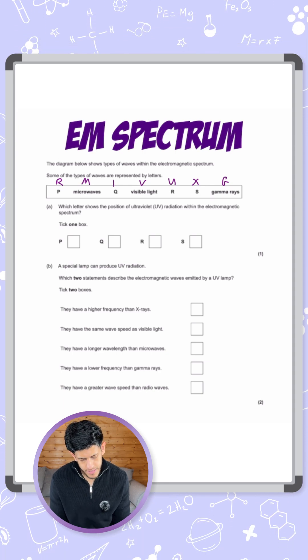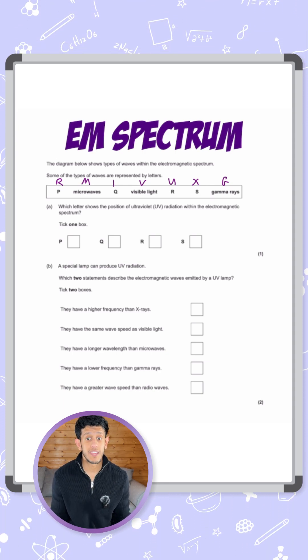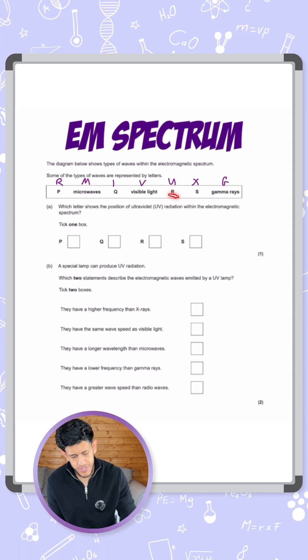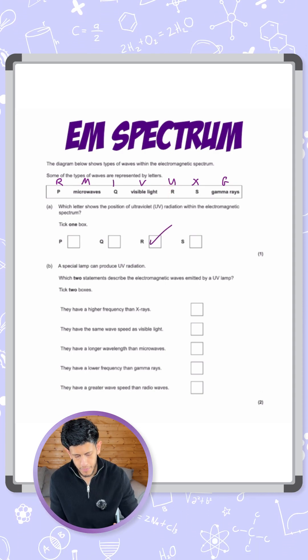We want ultraviolet, so ultraviolet begins with the letter U. That brings me over here and that corresponds to the letter R. So that's what I'll tick for the first mark.